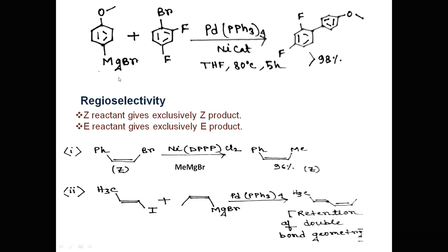Regioselectivity is an important feature of Kumada coupling reactions. If we take a reactant with Z geometry and it undergoes Kumada coupling with a Grignard reagent and nickel catalyst, we get a product having Z geometry. Similarly, a reactant with E geometry gives a product with E geometry — the double bond geometry is retained. We can conclude that a Z reactant gives exclusively the Z product, and an E reactant gives exclusively the E product.